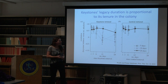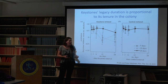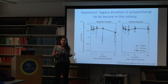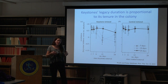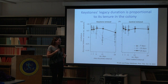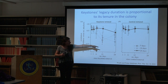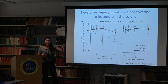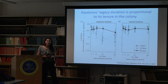Groups that had the keystone individual for just a few days before removing it basically lost this effect on collective prey capture. We compared this to control groups where we removed a shy individual instead - the keystone was always present, and as long as it was there, its effect persisted.